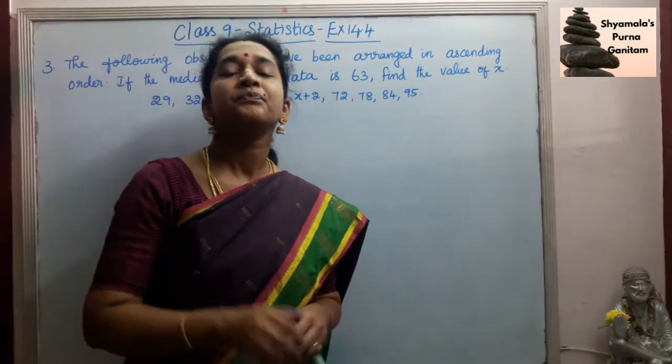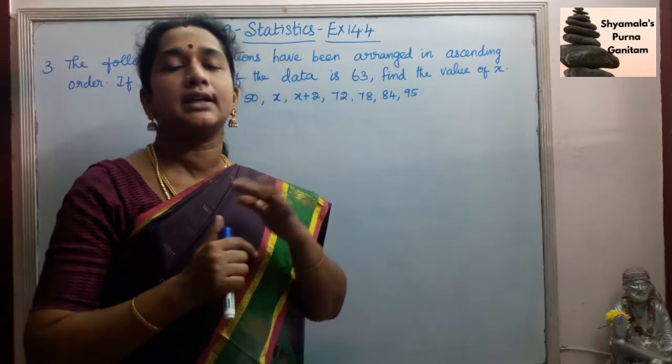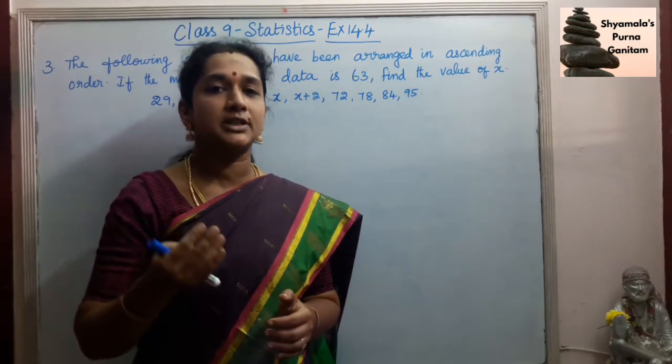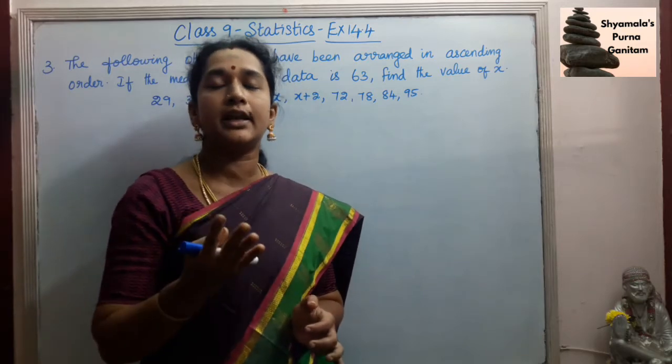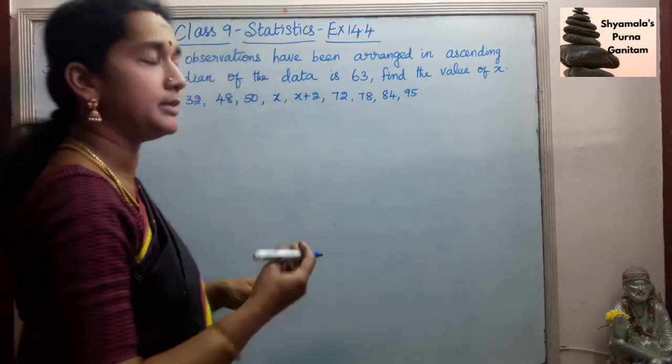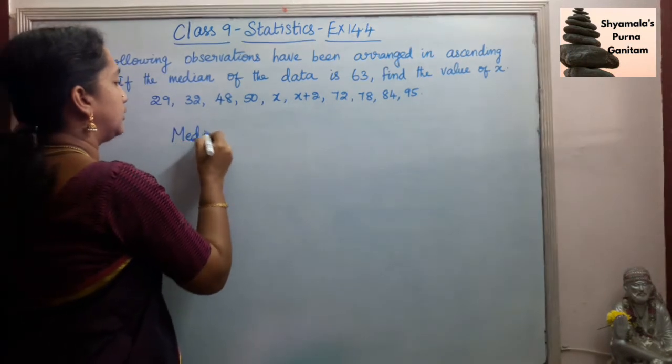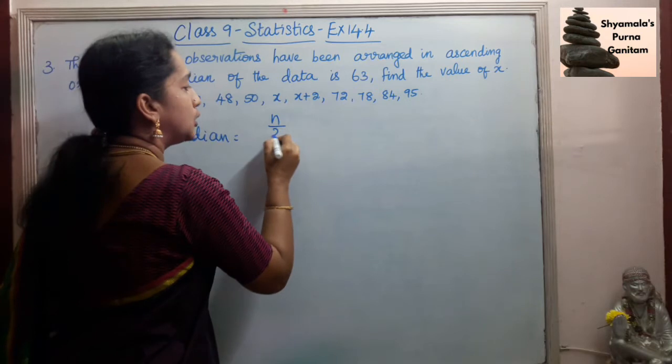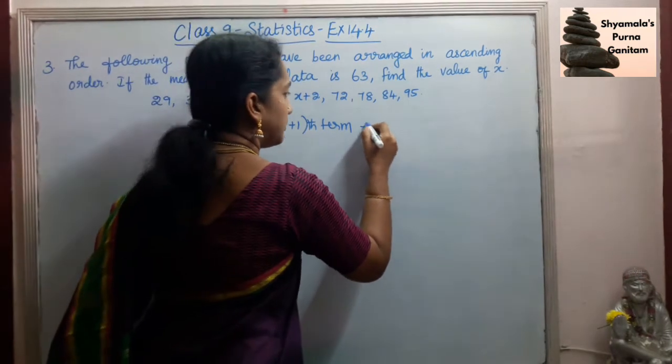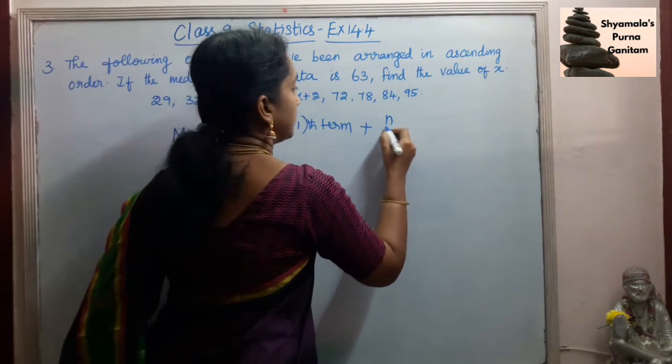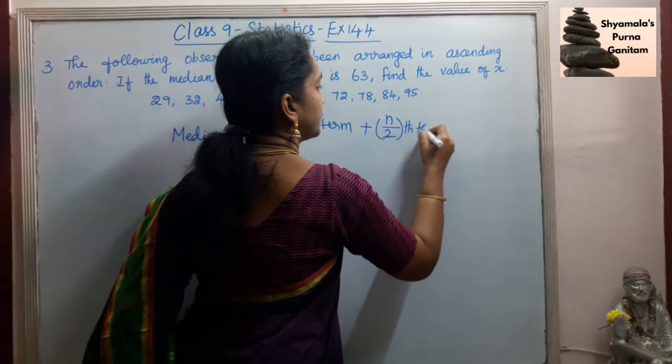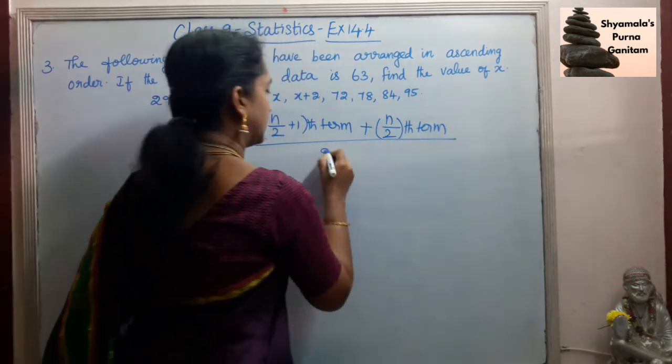So median will be the middle two terms we will get. So total is 10. 10 datas are given. So 10 by 2 is 5th term and 10 by 2 plus 1 is 6th term. So 5th and 6th data. If we find the average of this 5th and 6th data, we will get the median. So median is equal to n by 2 plus 1th term plus n by 2 term, divided by 2. We find the average of this.